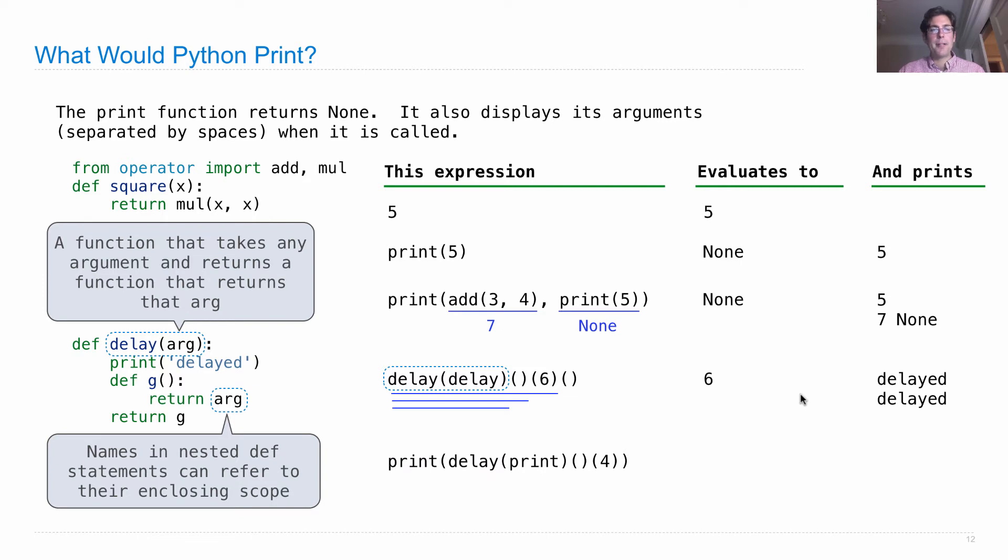One more: print(delay(print)())(4). What does this one do? We have to first evaluate this operand, which means evaluating this operator, which means evaluating its operator. So we delay(print), that prints delayed. Now we get back to the print function when we call it, and we call print on 4, which prints 4. So now we have the value of print(4) passed to print, and that's None, so we print None. And since the whole thing is a call to print, which always returns None, the value is None.